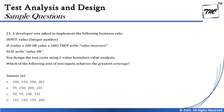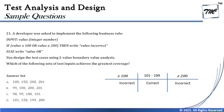The question says: you design test cases using two-point boundary value analysis. Which of the following set of test inputs achieves the greatest coverage? The table is straightforward: partition 1 is less than or equal to 100 (incorrect), partition 2 is 101 to 199 (valid), partition 3 is greater than or equal to 200 (incorrect). The four boundary values from two-point BVA are: 100, 101, 199, and 200.